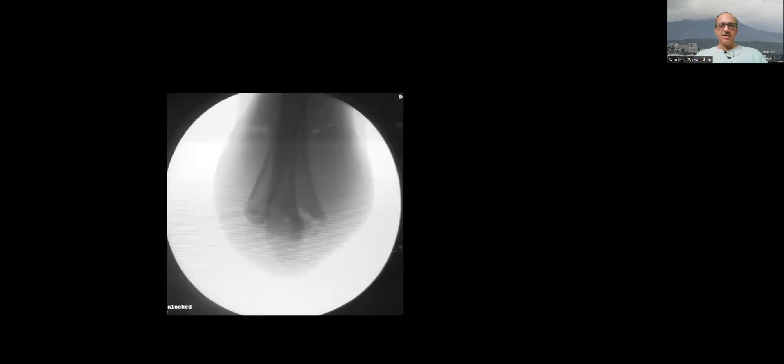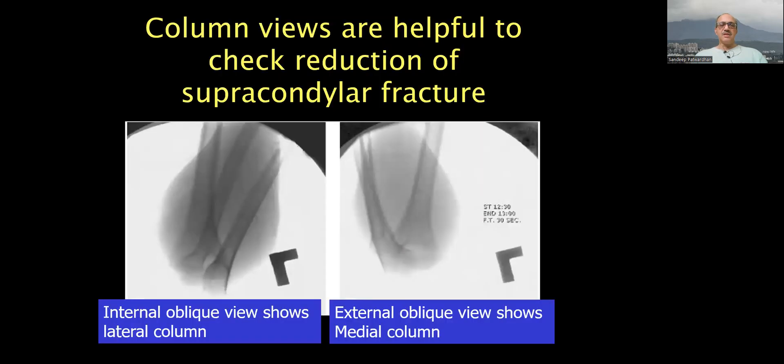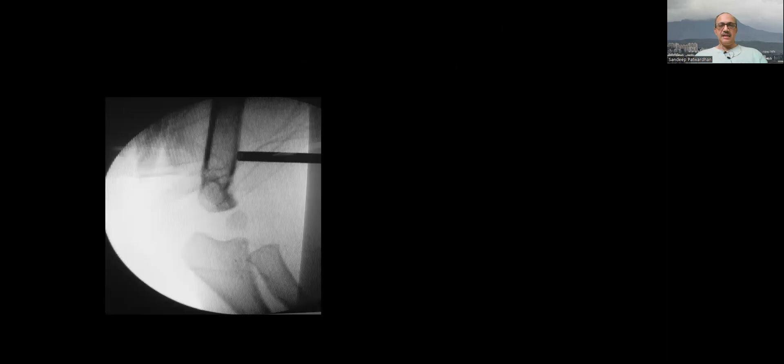How do you confirm quality of reduction? Take oblique views on C-arm. Look at the pillars. Are they sitting on top of each other nicely? And on the lateral view, like the Gordon's index, what is the width of the proximal and distal?